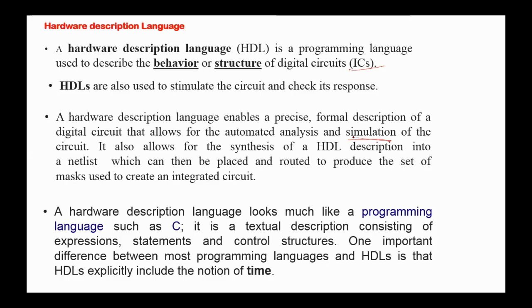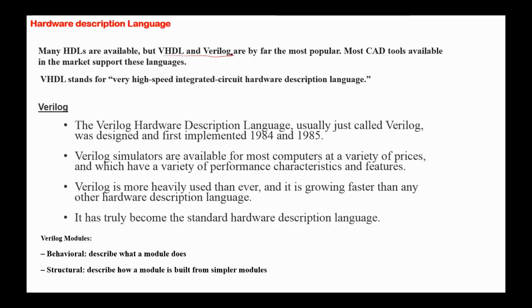A hardware description language looks much like a programming language, such as C. It is a textual description consisting of expressions, statements, and control structures. There is one difference between HDLs and programming languages in that HDLs explicitly include the notion of time.